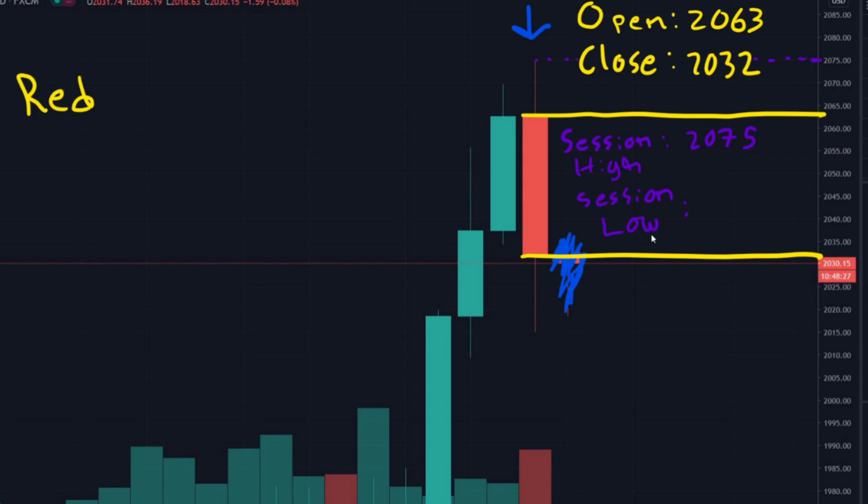And session low. What is the session low? Well, the session low was all the way down here at 2015. So we can see that a very volatile day here. The price was the intraday price was at the lowest price, 2015. And at the highest, it was up on 2075. So very big differences in price on that day for gold. Yeah. So here we have the open, close, session high, session low.